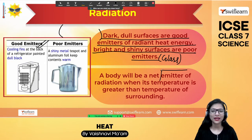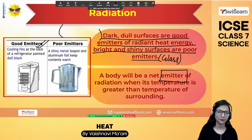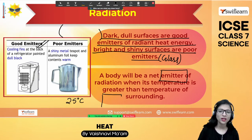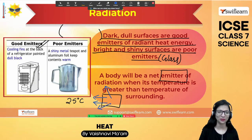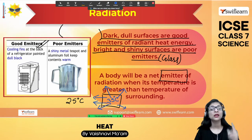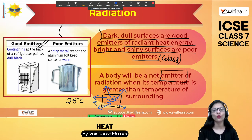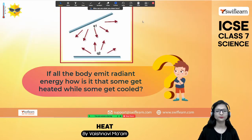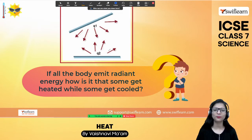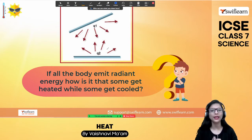An object will emit heat when its temperature is higher than the surrounding temperature. For example, if the surrounding temperature is 25 degrees Celsius, the object must be above 25 degrees to emit heat outward. Heat always travels from high temperature to low temperature. So an object acts as both an absorber and emitter, but it emits more when its internal temperature is higher than the surroundings.